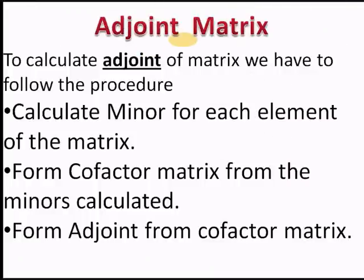To calculate the adjoint of a matrix, we follow this procedure. First, we find the minor for each element of the matrix. Second, we form the cofactor matrix from the minors we have calculated. Finally, we form the adjoint by transposing the cofactor matrix — the transpose of the cofactor matrix is called the adjoint matrix.